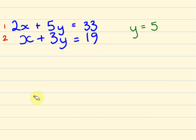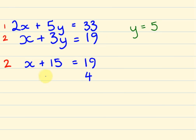We've ended up with the first bit of information we want: y equals 5. Now what we do is we start substituting values. Substituting values means that where we see y, we can pick one of these equations and instead of having y there, we put 5 in instead. So for equation 2: x is still x, but instead of writing 3y we can think of this as 3 times 5. So x plus 15 equals 19. What number do you add to 15 to get 19? It's 4. So x equals 4. That's the second part of our answer: y equals 5, x equals 4.